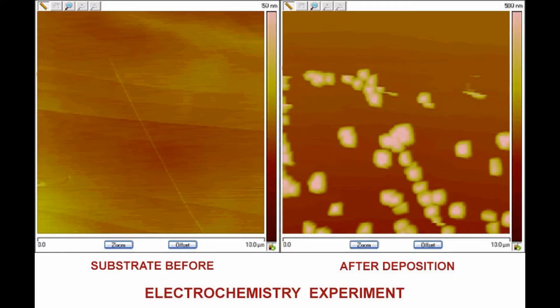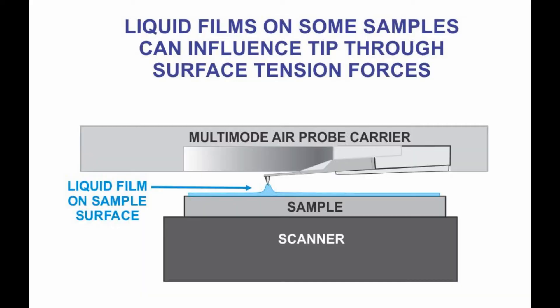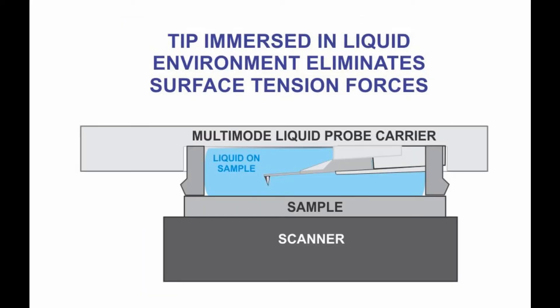Fluid imaging also allows researchers the opportunity to observe the surface changes taking place on samples during electrochemical reactions. Some samples demonstrate significant adhesion in air because of surface forces, and imaging in fluid will eliminate those forces.